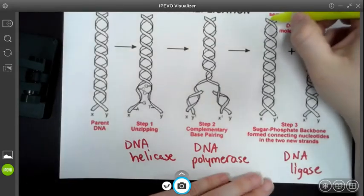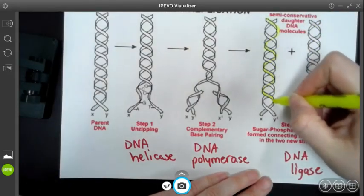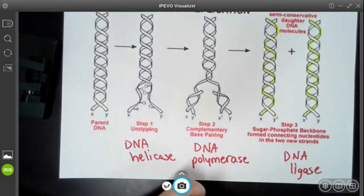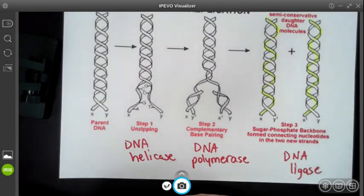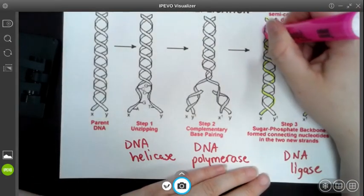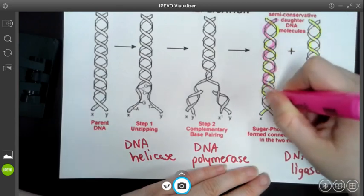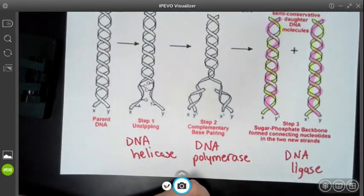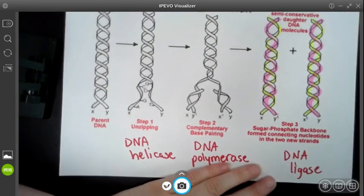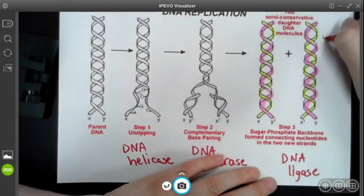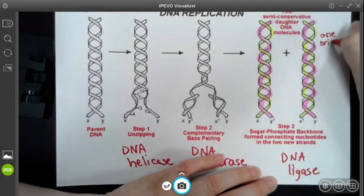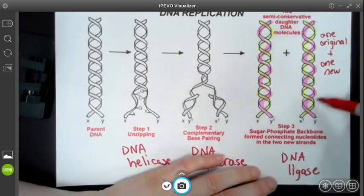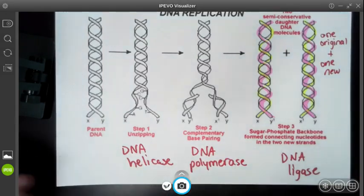I do want to point out on my strands of DNA at the end. Since my original DNA was split into two, my two copies are going to have one of my original strands and one new strand. So one original and one new strand in my two DNA strands at the end.